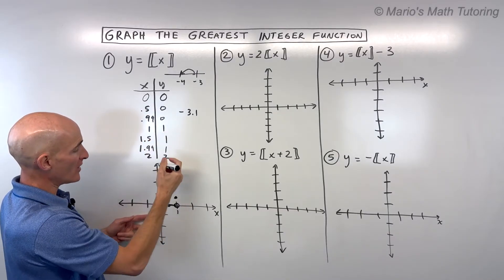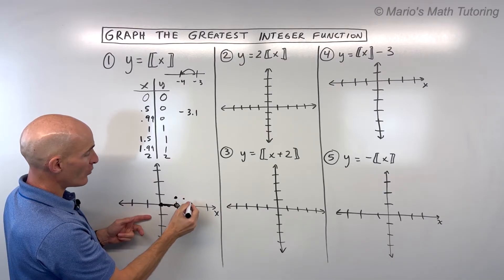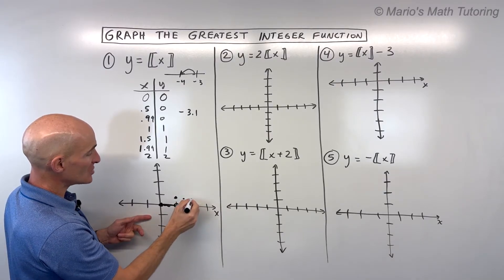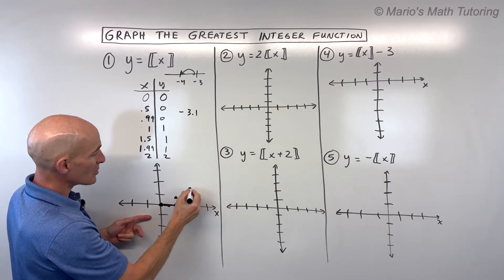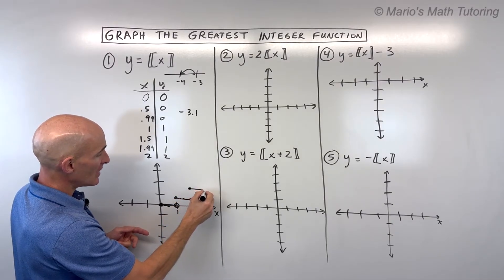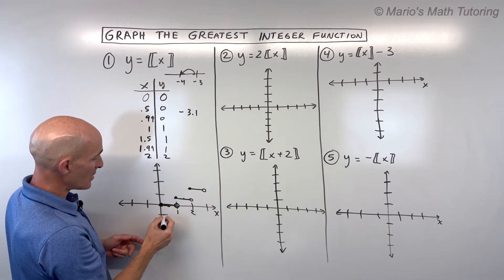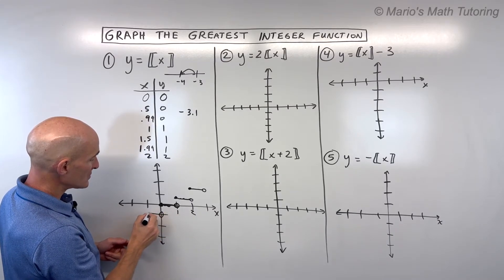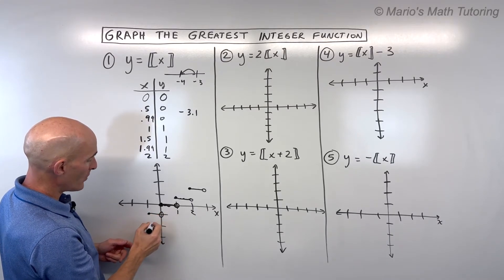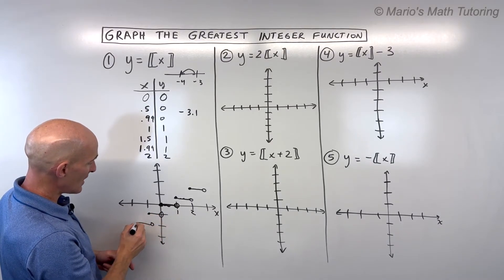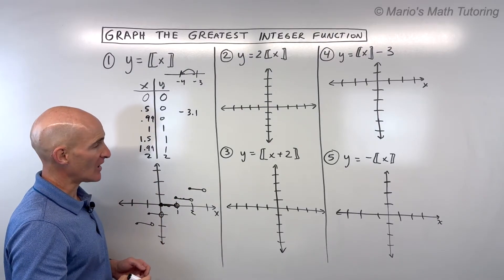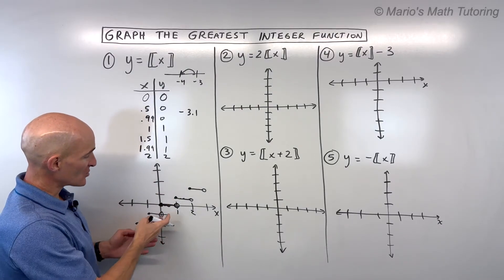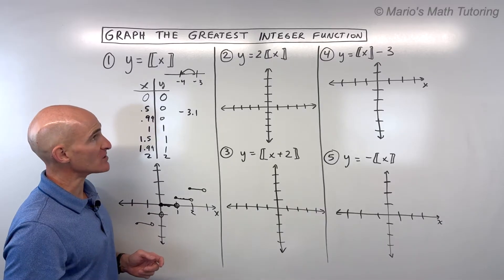1 maps to 1, 1.5 maps to 1, and 1.99 maps to 1. As soon as we get to 2, it's open here and it jumps up to the next stair. What you'll notice as you make a few of these steps is it's always going to be closed on the left and open on the right. Once you get a few stairs you can repeat that process. That's your step function or greatest integer function.